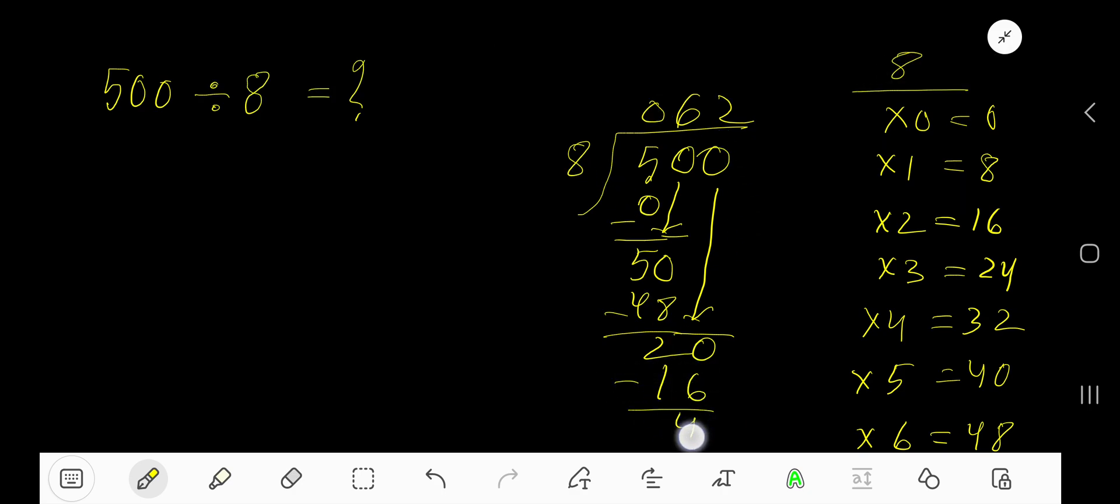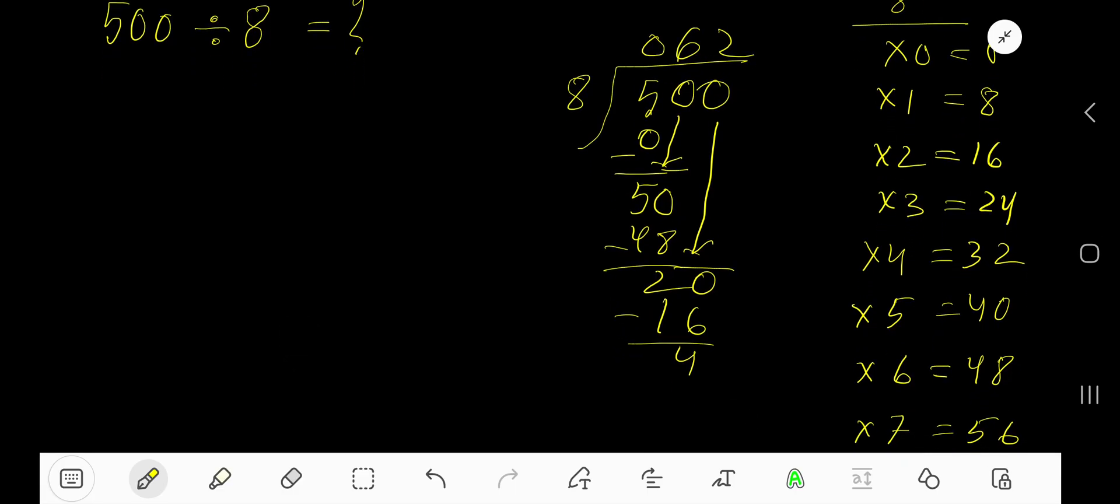Now our answer is 62, meaning 62 remainder 4. But if you want to write your answer in decimal form, then convert this number into a decimal number. Bring down the first 0. Before the 0 there is a decimal. The decimal must come to the quotient directly.